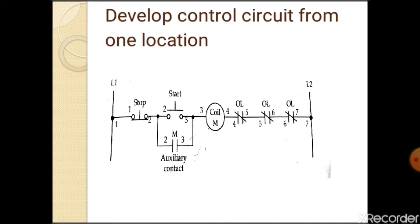First one we will study develop control circuit from one location. From one location we are developing the control circuit. See from this here two vertical lines L1 and L2. From point one to stop push button, start push button, auxiliary contact, motor and overload relays. For each and every line we are starting we are giving a number. And this auxiliary winding which holds the contacts.